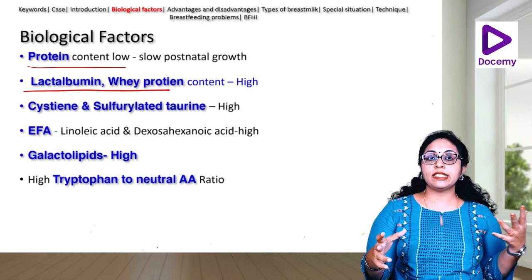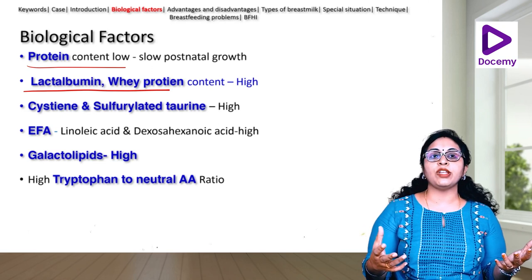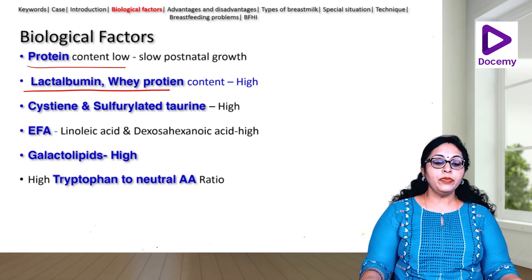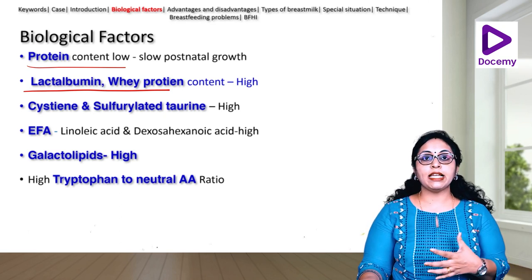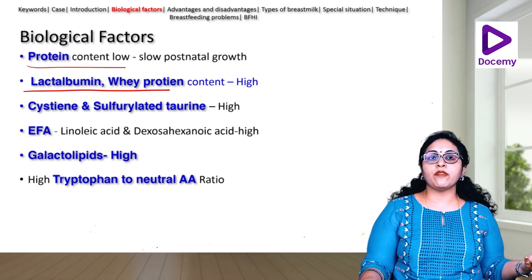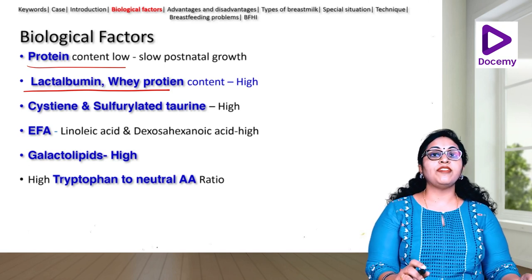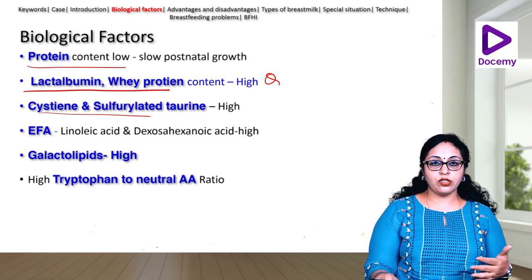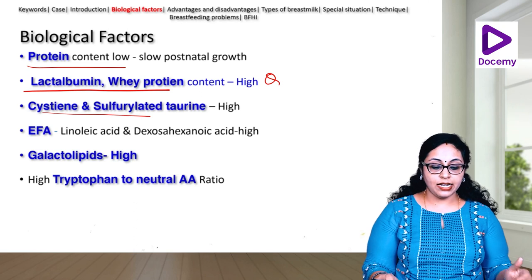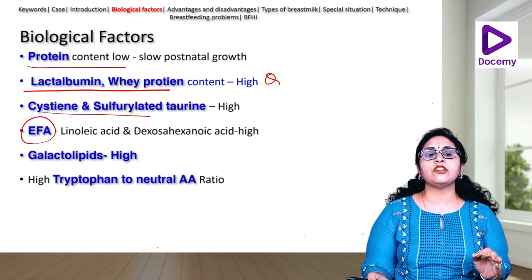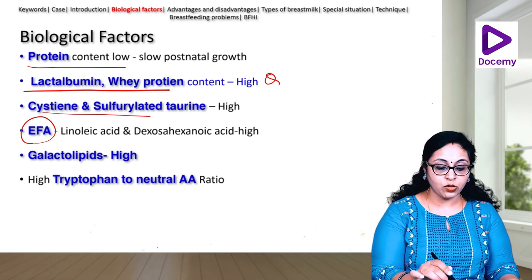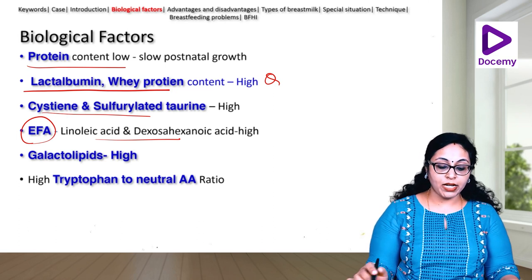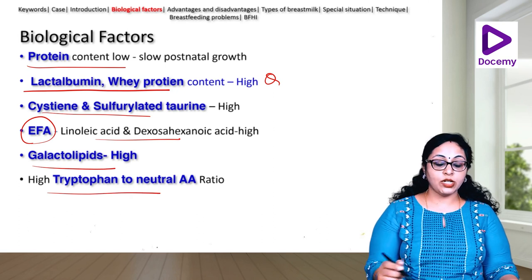There are two types of protein in milk: casein and whey protein. Casein is the inferior protein, found in high quantities in cow's milk. Whey protein is the better protein for humans, found in good quantities in human milk. Lactalbumin is the protein in human milk, while lactoglobulin is found in cow's milk. Human milk also has high levels of cysteine and sulphur-containing taurine — essential amino acids with sulfur groups. Essential fatty acids like linoleic acid and docosahexaenoic acid, vital for brain growth, are at higher levels in human breast milk, along with high levels of galactolipids and high tryptophan-to-neutral-amino-acid ratios.